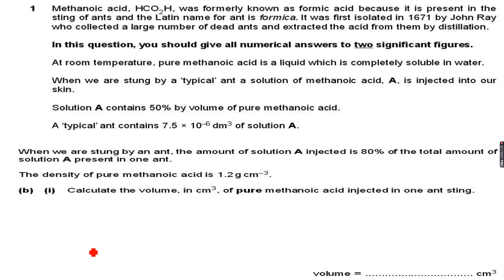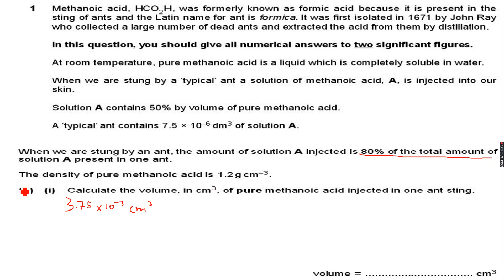When stung by an ant, the amount of solution A injected is 80 percent of the total amount of solution A present in one ant. The density of pure metanoic acid is 1.2 g/cm³. We need to calculate the volume in cm³ of pure metanoic acid injected in one ant sting. We had 3.75×10⁻³ cm³ of pure metanoic acid in solution A, and since 80 percent of solution A is injected...